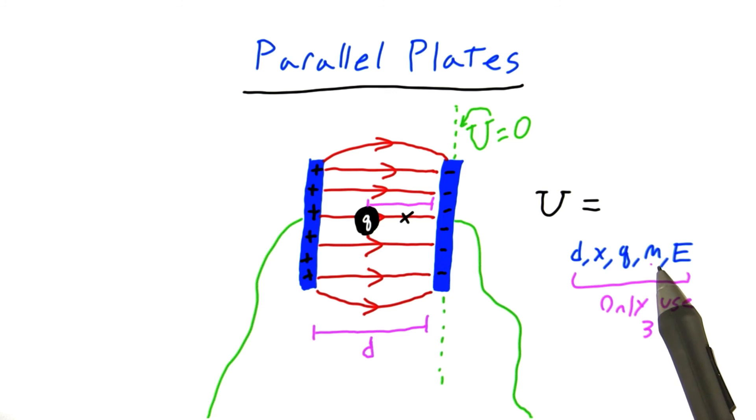the mass of the particle m, and the strength of this electric field E. In your formula, you can use any of these variables, but you should only have to use three of them. Put your answer here, and good luck.